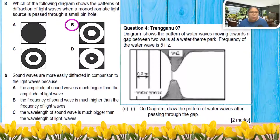Number nine: sound is more easily diffracted compared to light. The reason is the wavelength - the wavelength of sound is much bigger than the wavelength of light.